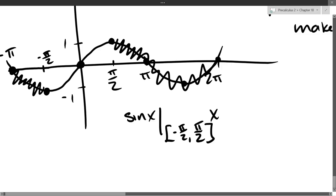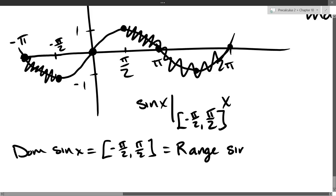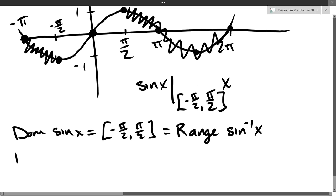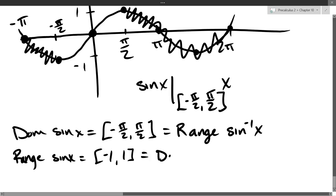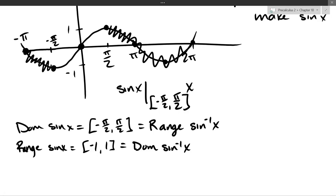The domain of this restricted sine is negative π/2 to π/2, and this becomes the range of sine-inverse of x — the original domain is the range of the inverse. The range of sine x is negative one to one, and that is the domain of sine-inverse of x. Similar to cosine inverse, but the original domain is very different: negative π/2 to positive π/2.